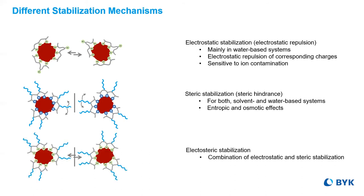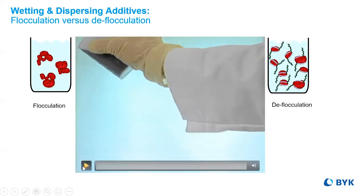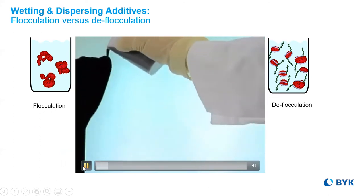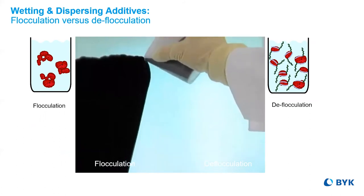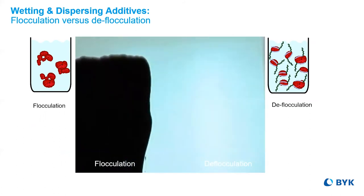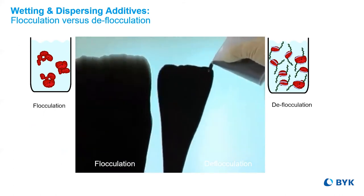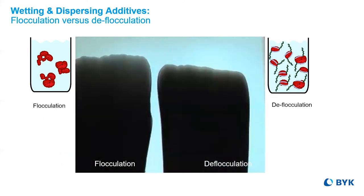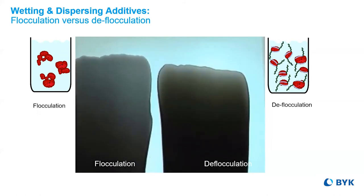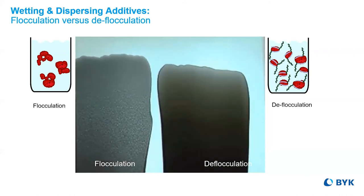And third, electrostatic stabilization, which is a combination of the earlier two with less of a tendency for ion contamination when compared to electrostatic repulsion. I'd like to pause here to show a video of the differences between flocculation and deflocculation. Noting that both paints look the same in the can, they're poured down onto a mylar film and let to dry. Over time you can see the change in color and the obvious flocculation versus deflocculation.